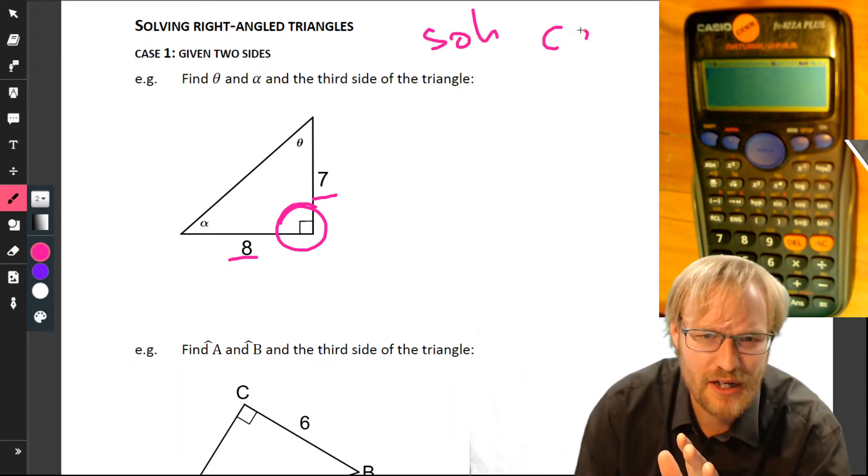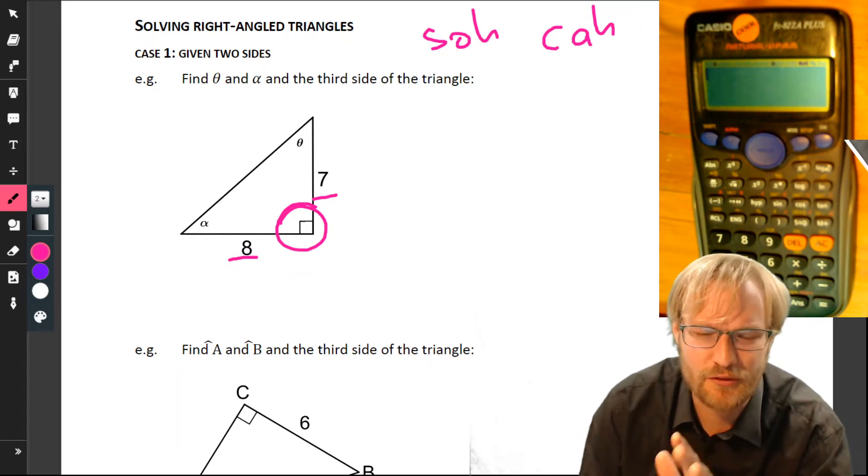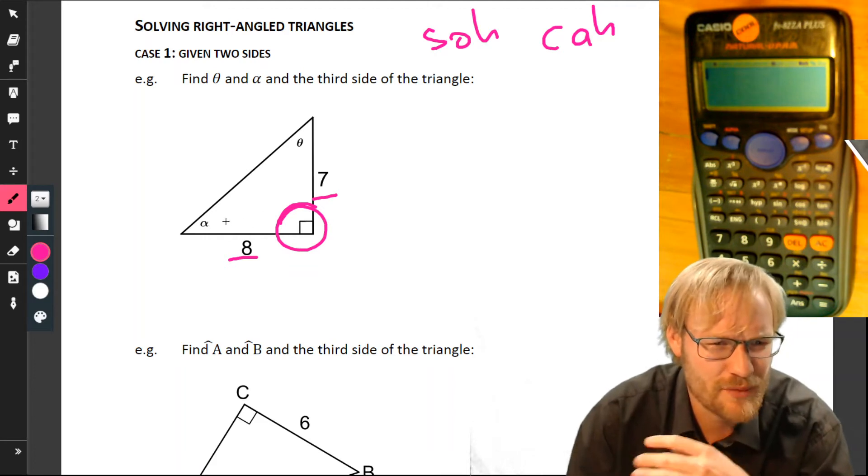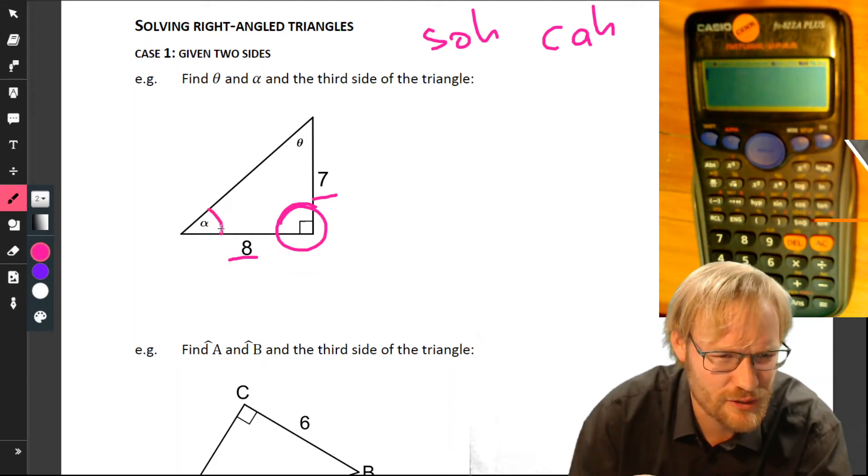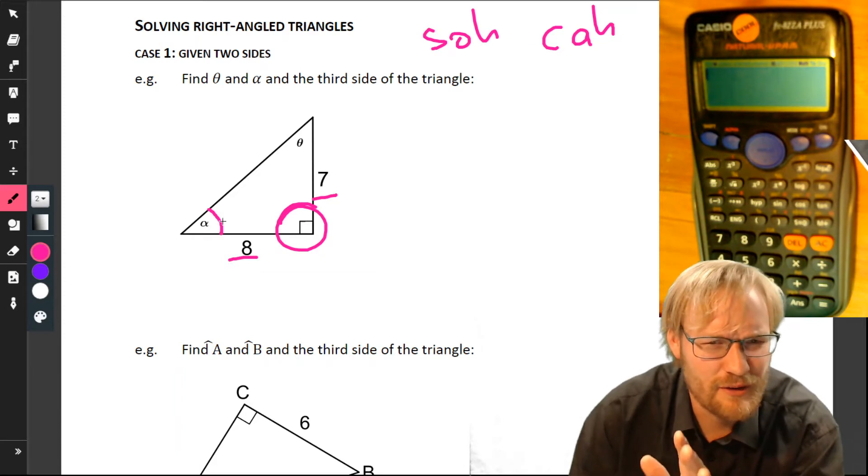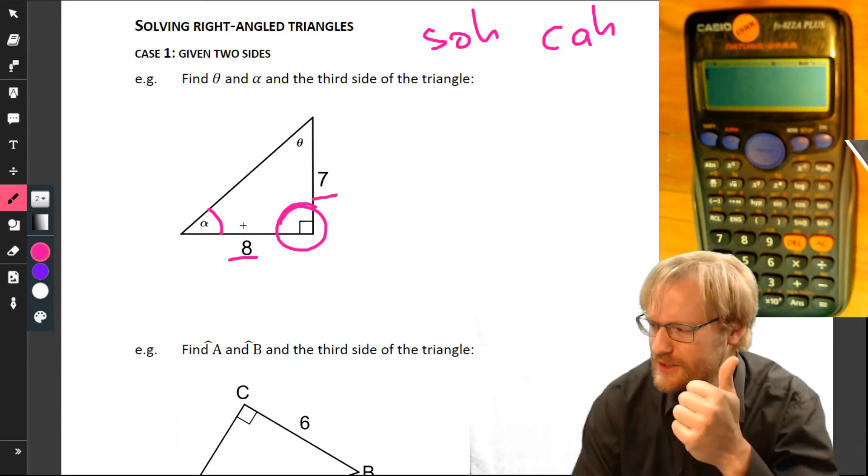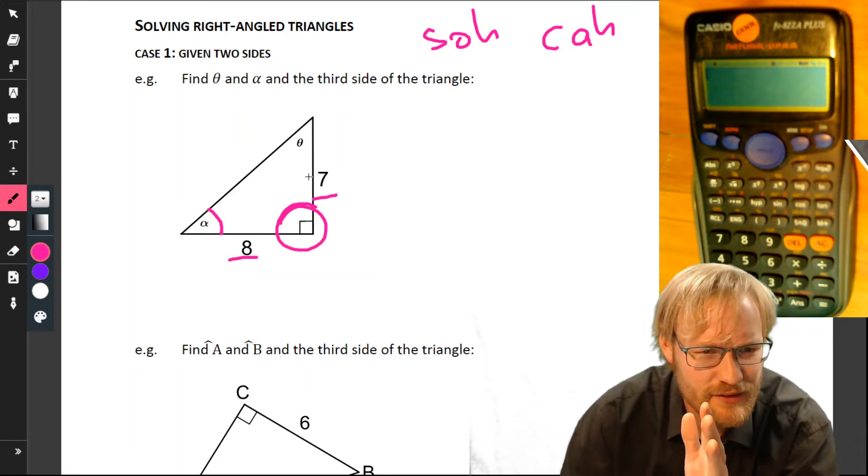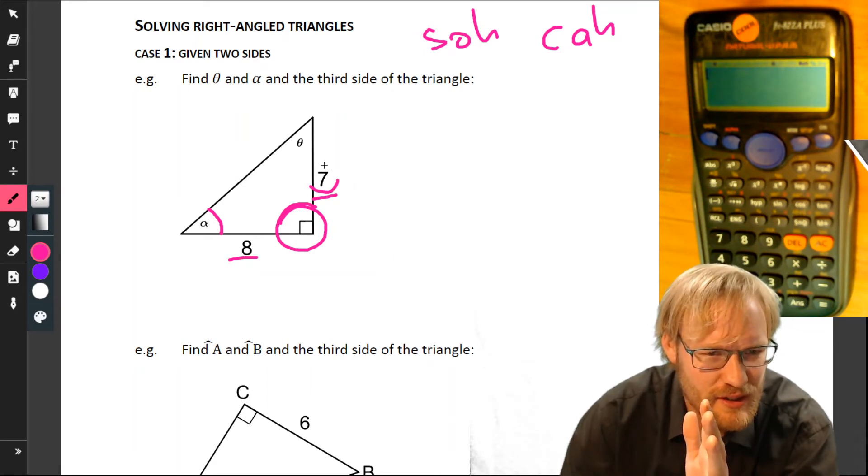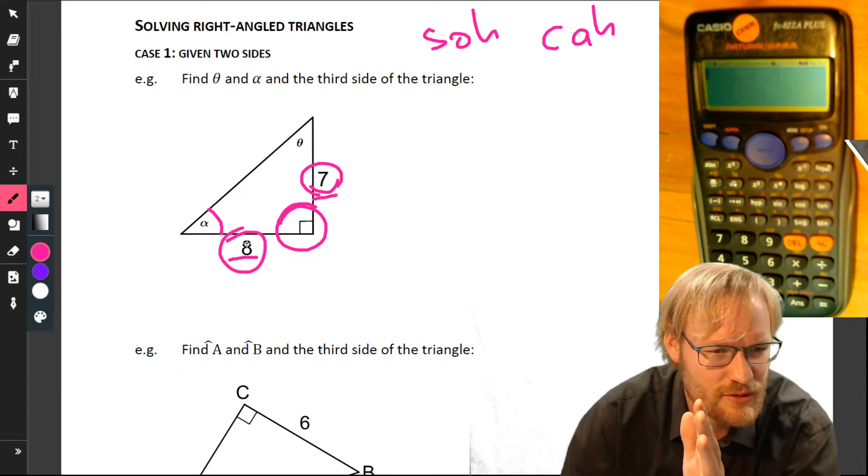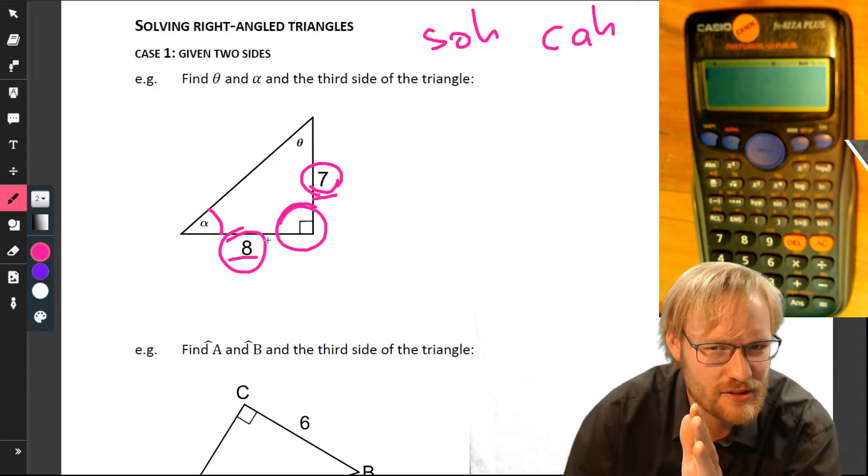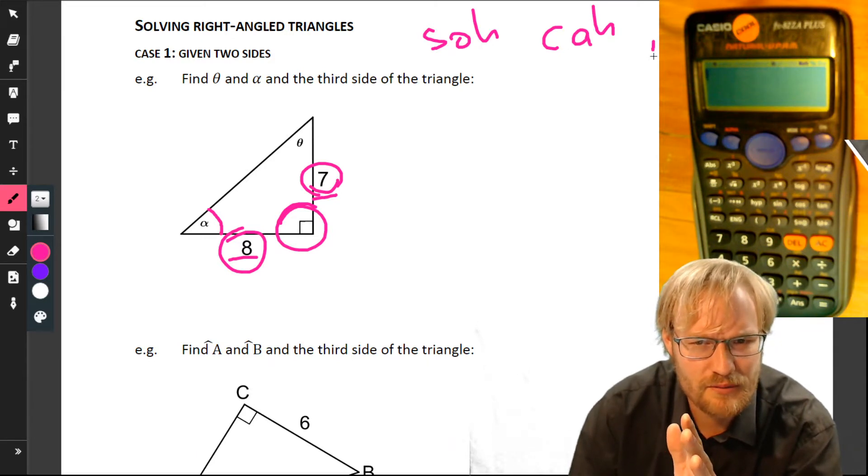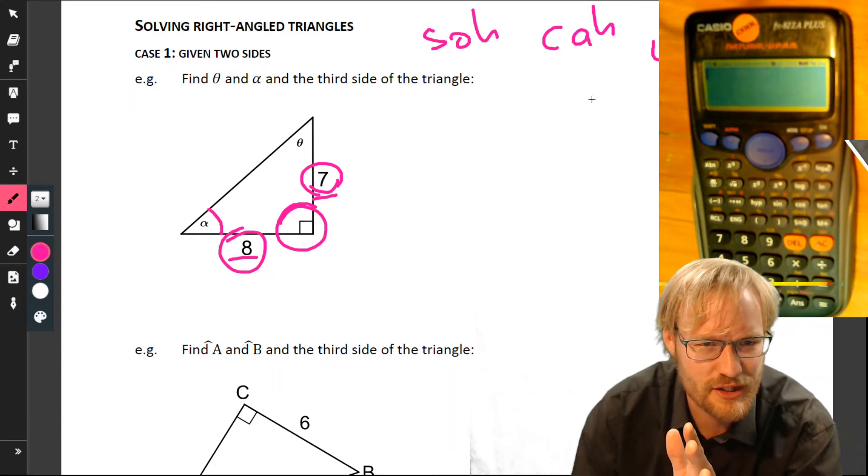Remember we've got SOHCAHTOA, and we've got that ready to go so it can help us along. Let's start with alpha. Alpha is the bottom left. Relative to alpha, what do we have in terms of opposite, adjacent, and hypotenuse? I've got this 7 that's opposite, and we've got this 8 which is adjacent. So of the three trig ratios we're using, it's tan, because we've got opposite and adjacent.